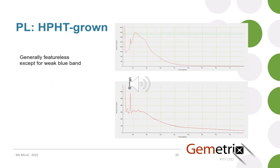For HPHT-grown diamonds, the fluorescence is very weak blue and consequently the PL will also be weak, tending to be generally featureless at low intensity in the blue band, as seen in the top example here. There will also be a spike which is the Raman signal associated with diamond.